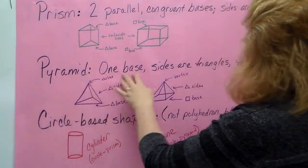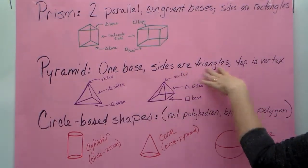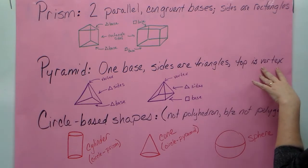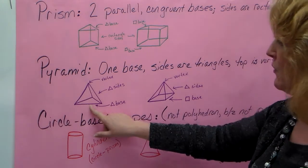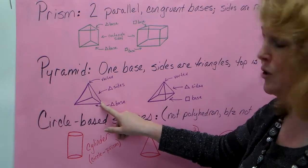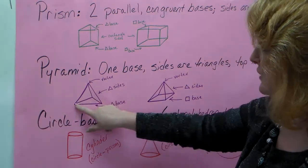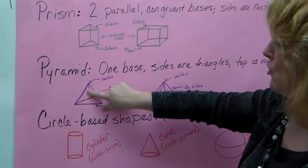Then we go to pyramids. A pyramid has one base, the sides are triangles, and the top is a vertex. So here I have a triangular pyramid because the base is a triangle, the sides are triangles.